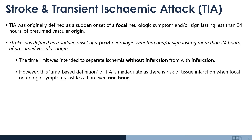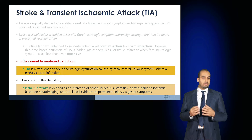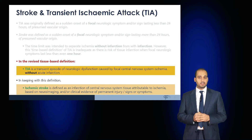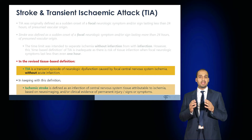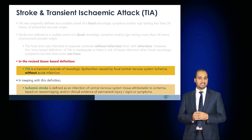The time limit was intended to separate ischemia without infarction from infarction. However, the time-based definition of TIA is considered inadequate, as the risk of tissue infarction when focal neurological symptoms occur can occur with even less than one hour of symptoms. As a result, a revised tissue-based diagnosis of TIA is a transient episode of neurological dysfunction caused by focal central nervous system ischemia without acute infarction.